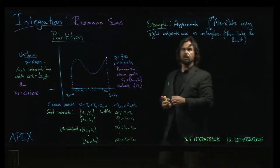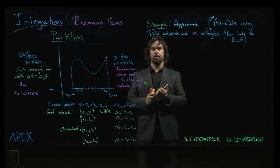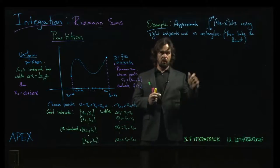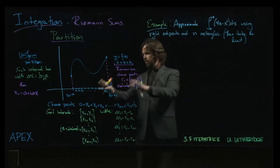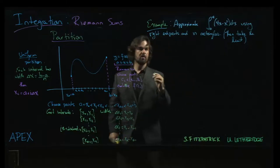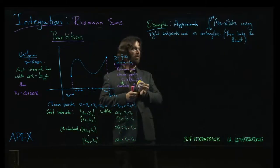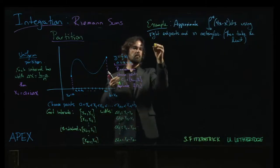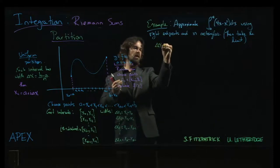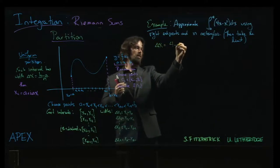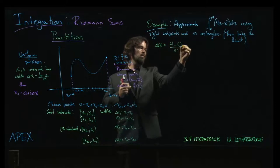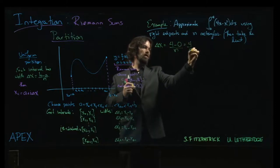Alright, we're going to return to this example one last time, this time using an arbitrary number of rectangles. So we have our partition machinery sitting right here. Remember that delta x will be right endpoint, 4, minus left endpoint, 0, over n, so just 4 over n.